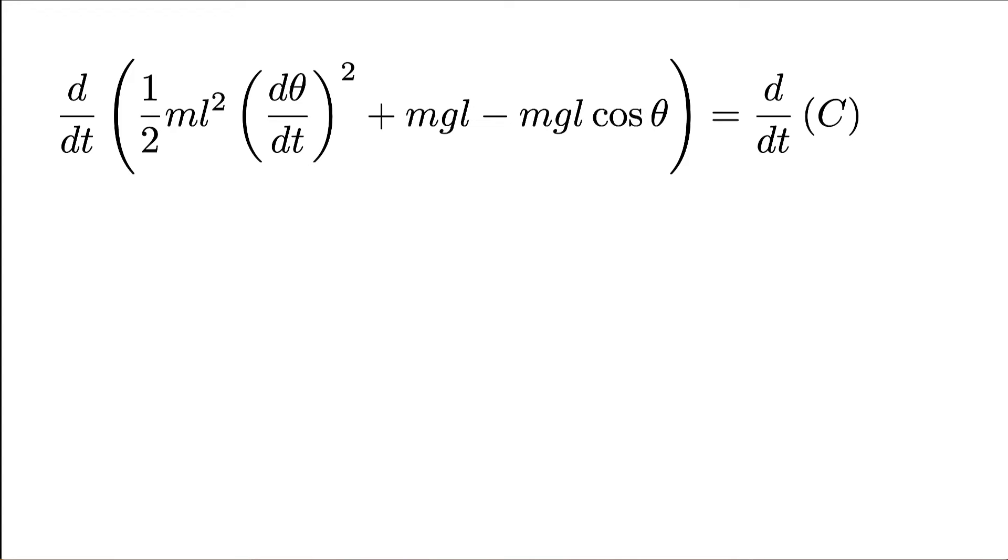While this looks complicated, there's a bunch of stuff that's not that complicated. For example, mgL and C are both constants, so their derivatives are zero. For the first part, ½mL²(dθ/dt)², when I take the derivative, the two comes down and cancels with the one-half. Then remember, I'm taking the derivative with respect to t, so the chain rule indicates I need the second derivative of θ with respect to t. That is the derivative of dθ/dt.